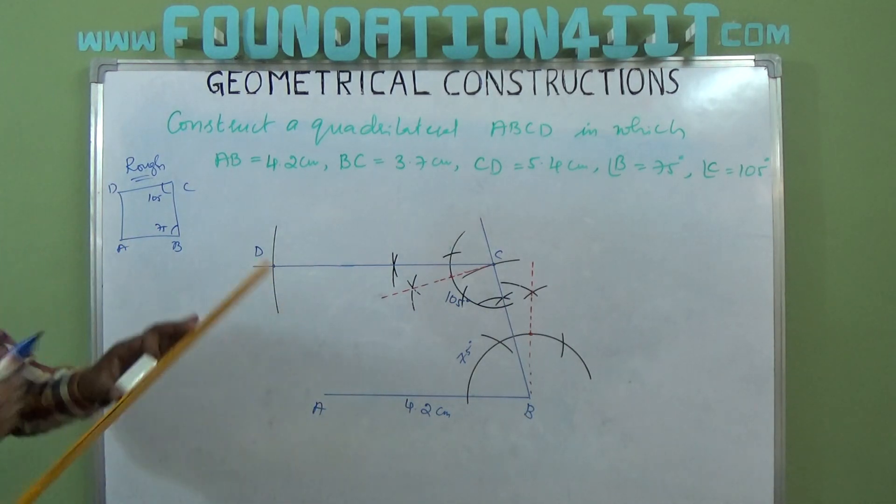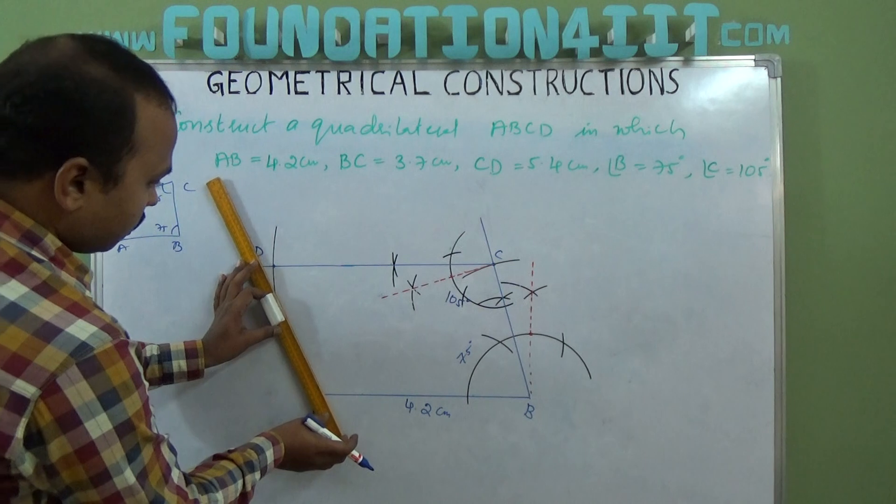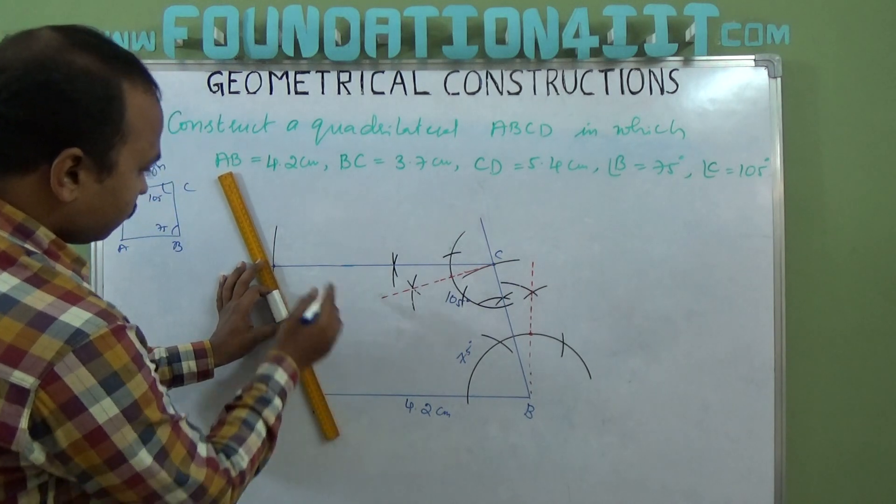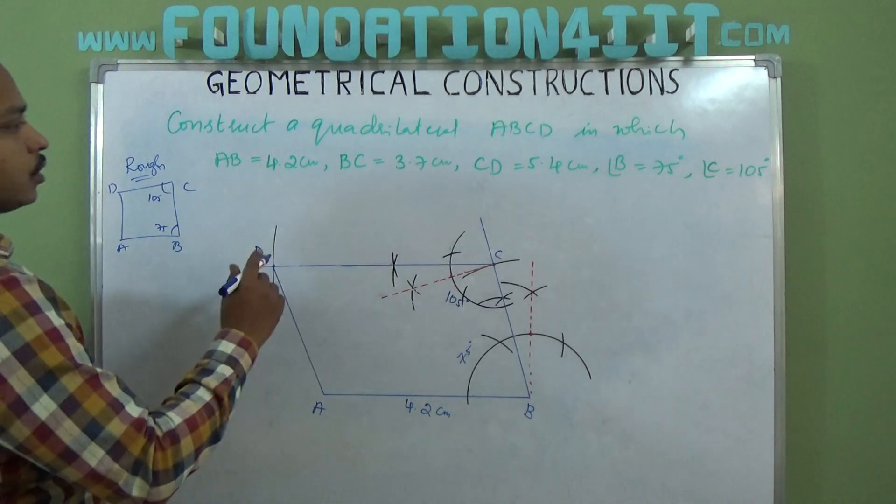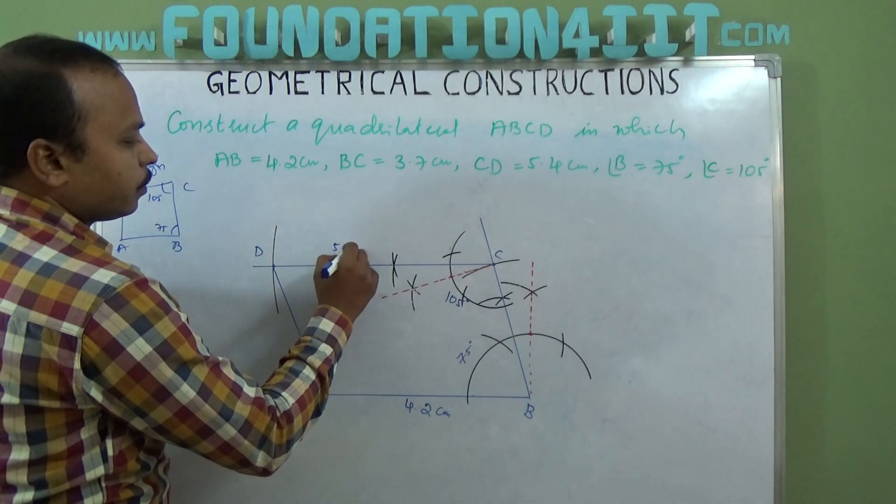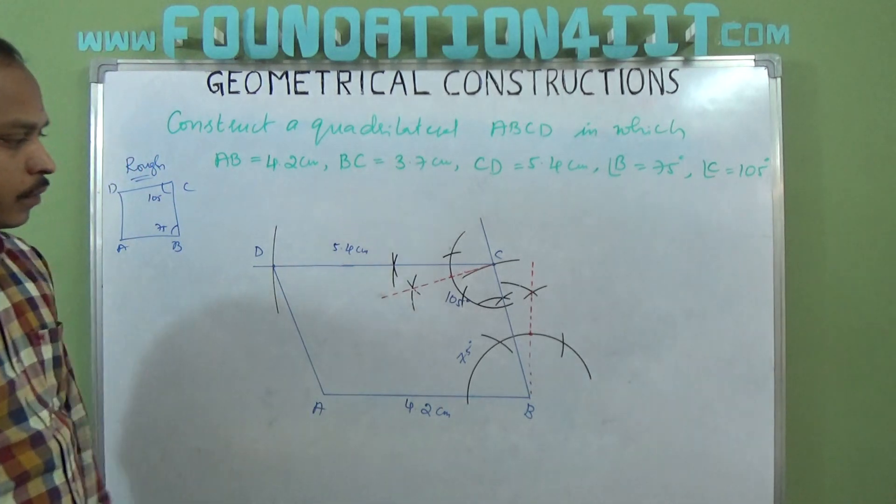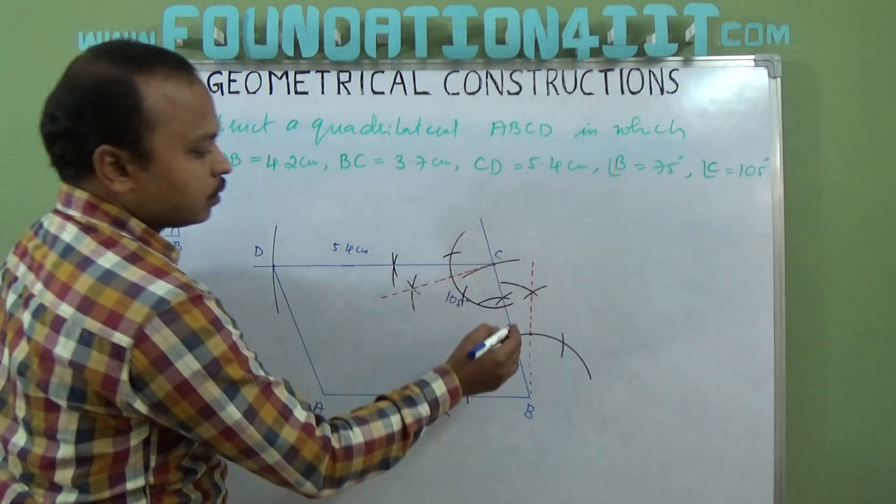Where it touches, that is nothing but point D. This is D. Everything got ABCD. Now just join A to D.